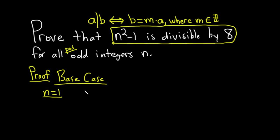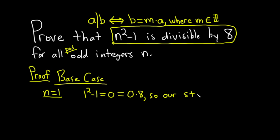When n equals 1, this will be 1 squared minus 1, which is 0, which equals 0 times 8. So it's a multiple of 8, and the statement is true when n equals 1. Our statement is true for n equals 1.